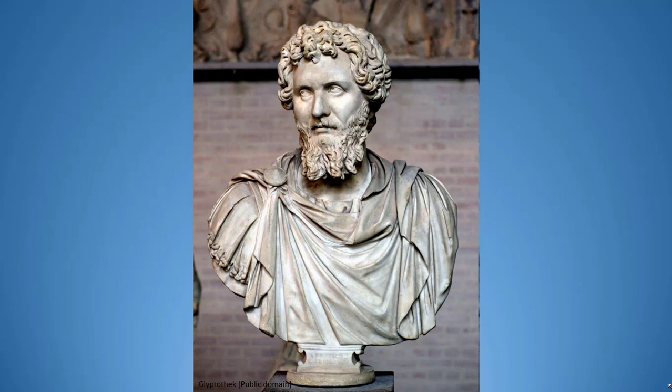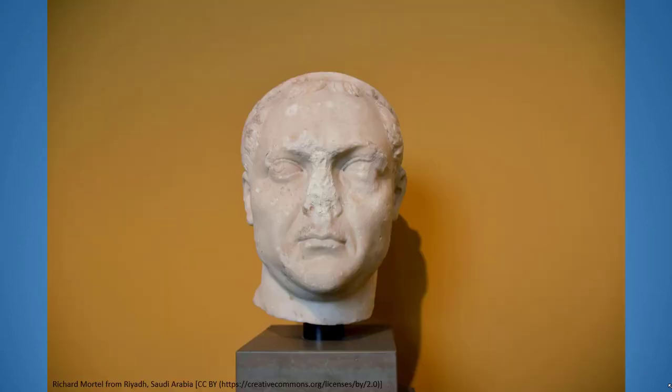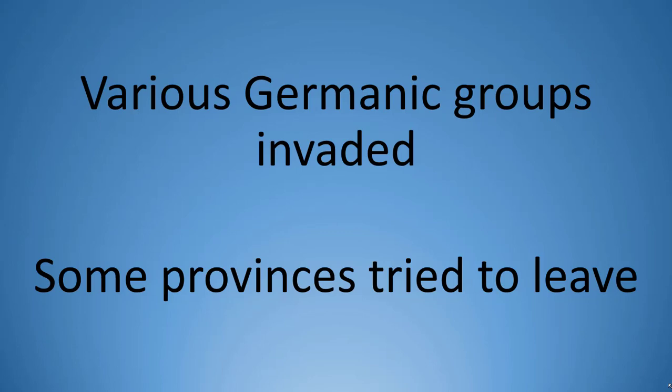Once the Severan dynasty came to an end, more instability rocked the empire. From 235 to 284, there were 22 emperors, only two of which died of natural causes. To put this into perspective: from 96 to 180, a period of 84 years, there were only five emperors, but now in a period of 49 years there were more than four times as many. The low point came under Valerian, who was captured in battle by the Persians and died in captivity. Additionally, various Germanic groups began testing Rome's borders, and parts of the empire tried to break away as independent kingdoms.